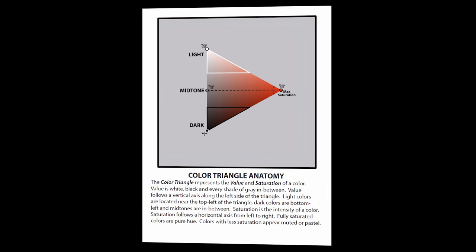Moving on to the next page, we can talk about the color triangle anatomy. The color triangle represents the value and saturation of a color. Value is white, black, and every single shade of gray in between. Value follows a vertical axis along the left side of the triangle. Light colors are located near the top left of the triangle. Dark colors are bottom left, and midtones are in between.